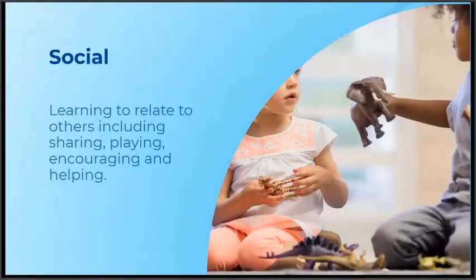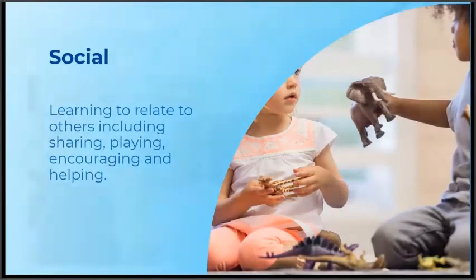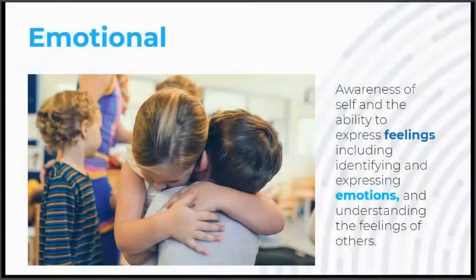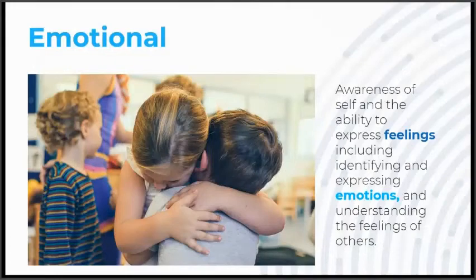Social development is learning to relate to others, including sharing, playing, encouraging, and helping. Emotional development is the awareness of self and the ability to express feelings, including identifying and expressing emotions and understanding the feelings of others.